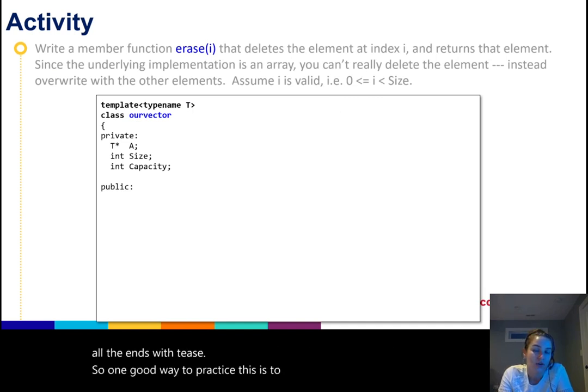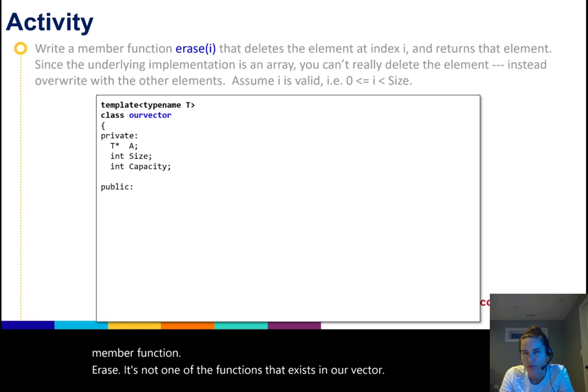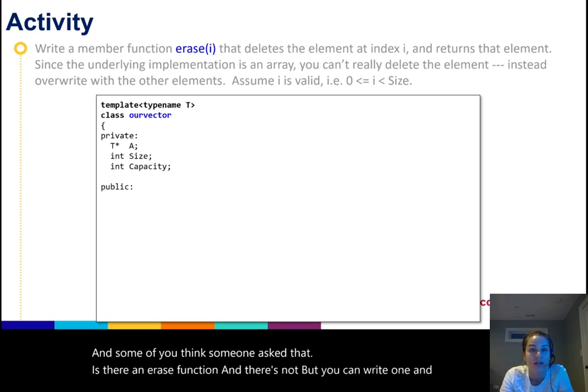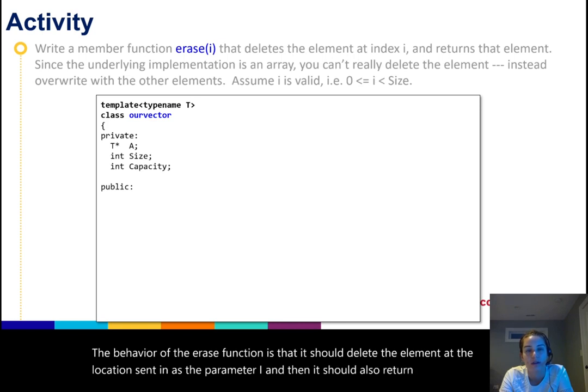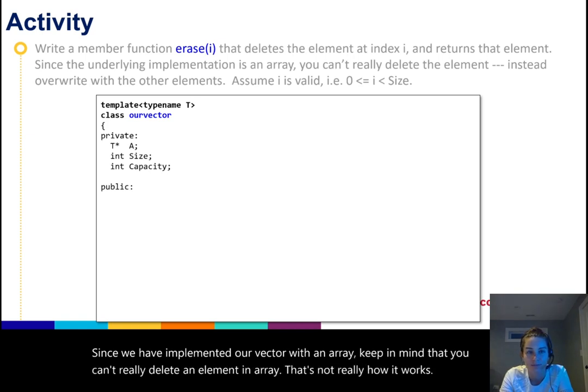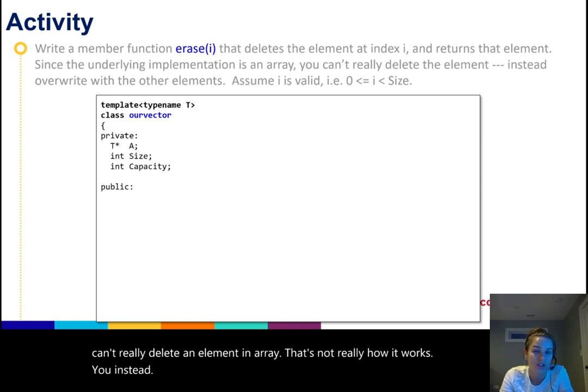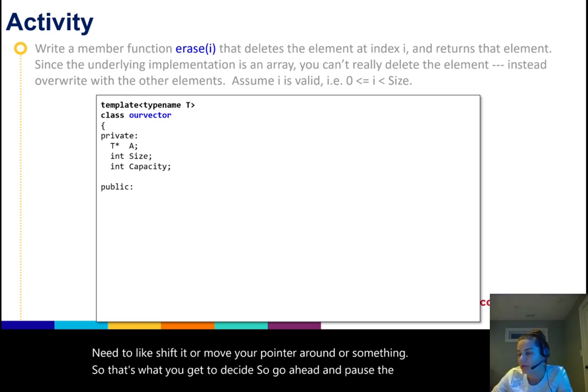So one good way to practice this is to write one on your own. You can pause the video and do this. But it's basically asking you to write a member function erase. It's not one of the functions that exists in our vector. And so this is how you would do that. The behavior of the erase function is that it should delete the element at the location sent in as the parameter i, and then it should also return that element. Since we have implemented our vector with an array, keep in mind that you can't really delete an element in an array. That's not really how it works. You instead need to shift it or move your pointer around or something. So that's what you get to decide. So go ahead and pause the video and think about how you would do that.